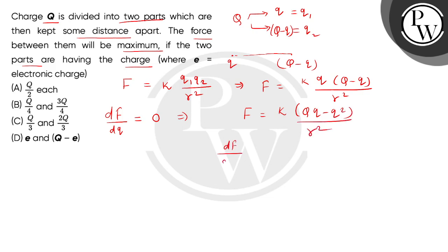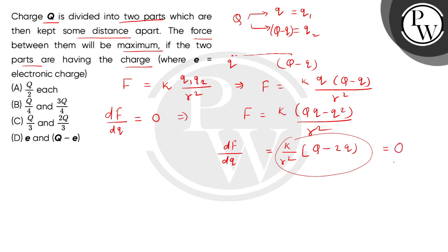Now we find the first order derivative of F with respect to q. The result is K divided by r square times the bracket Q minus 2q. For force to be maximum, the first order derivative must equal zero. So Q minus 2q equals zero, which means q equals Q by 2.